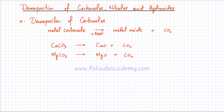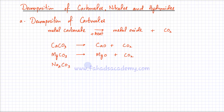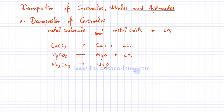Let's do one more example with sodium carbonate (Na2CO3). If you heat this carbonate, it produces sodium oxide. Since Na is +1 and oxygen is -2, the formula of sodium oxide is Na2O, plus it also produces carbon dioxide.